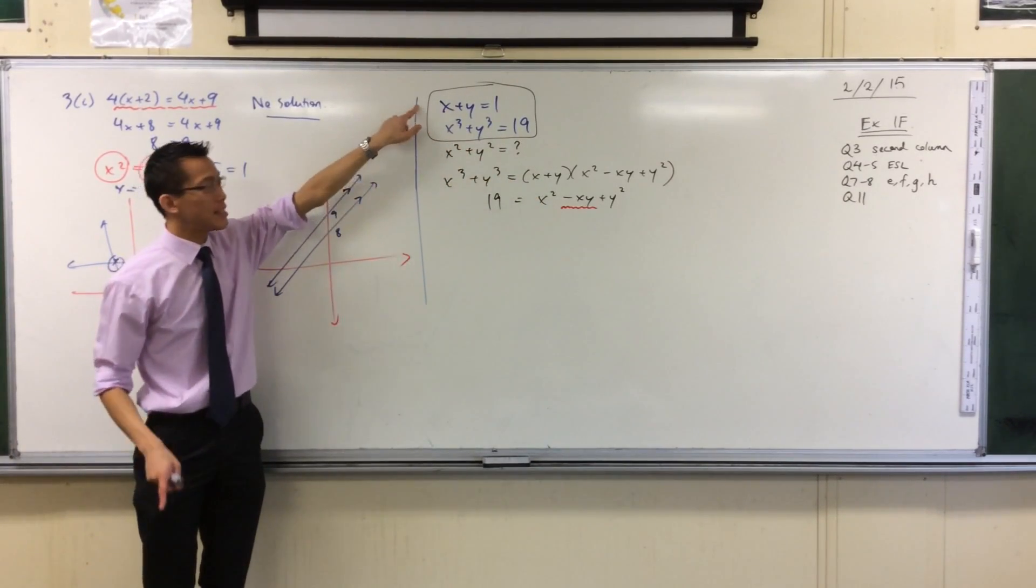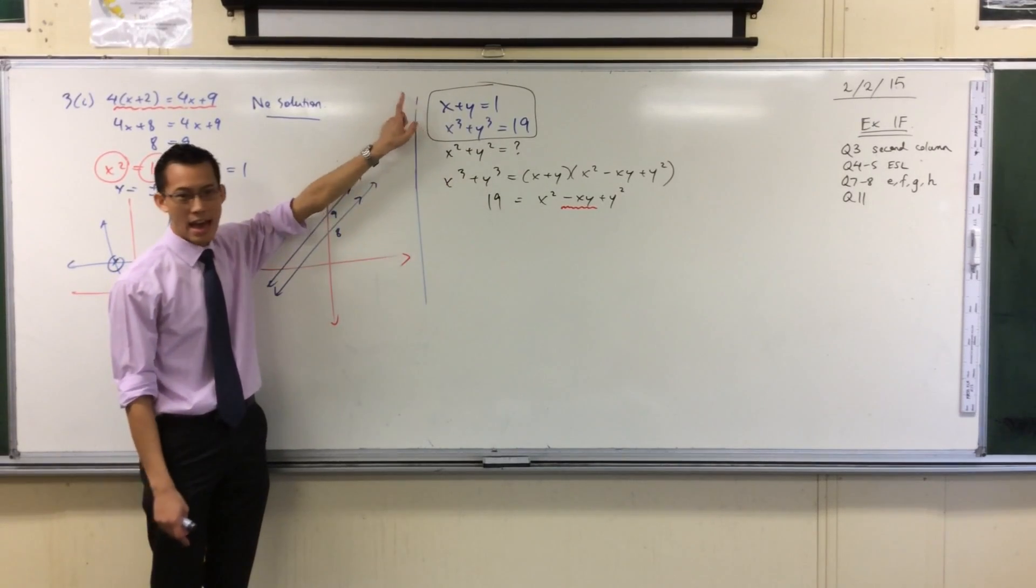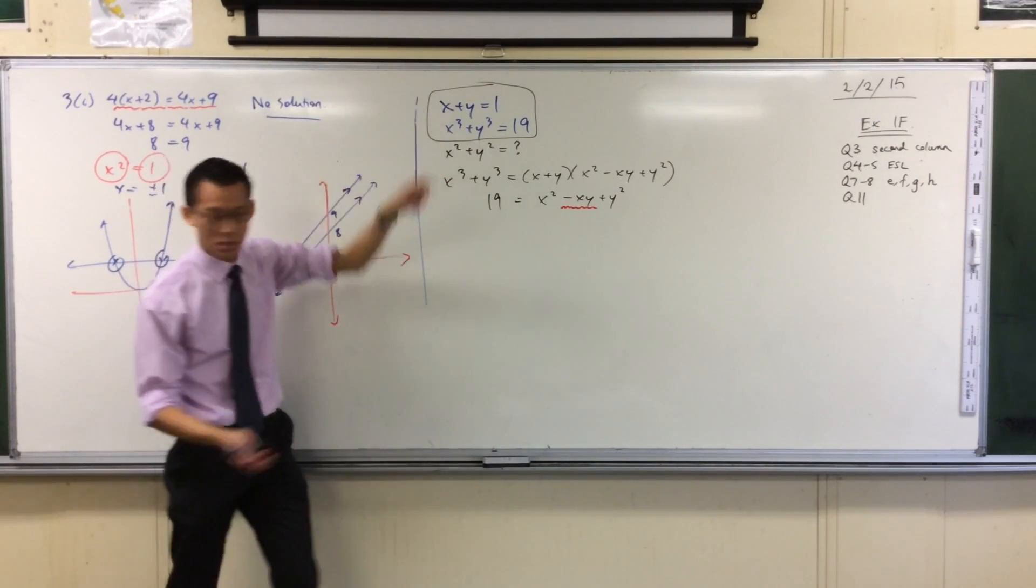Whereas when you look at this line, actually it's quite easy to get an xy out of there. What should we do to it? We should square it.